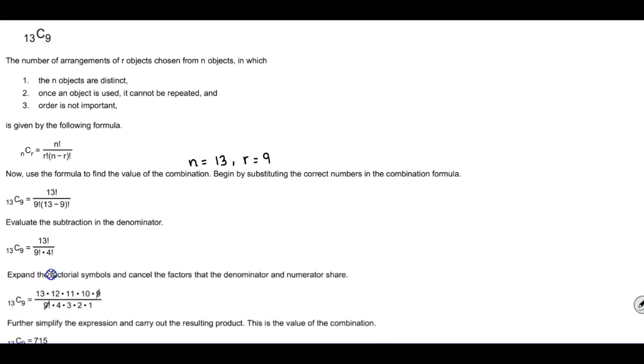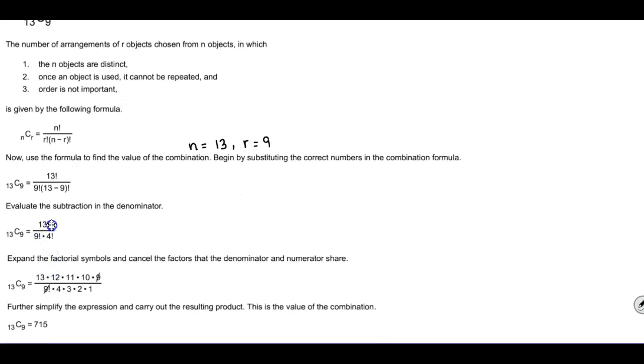Now we want to be able to go as far as we can to simplify. We know that since we have 9 factorial in our denominator and that's larger than 4 factorial, and we know that there's 9 factorial within 13 factorial, then we can stop at 9 factorial.